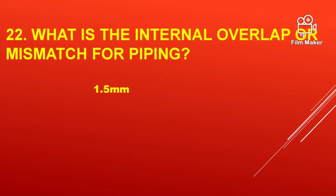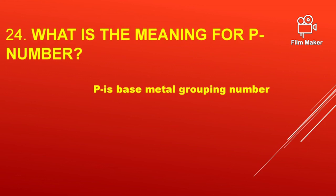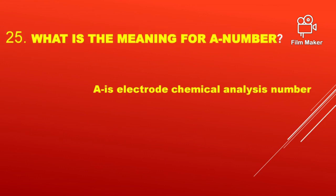What is the internal overlap or mismatch for piping? 1.5 mm maximum. What is the meaning of F number? F is the filler metal grouping number. What is the meaning of P number? P is the base metal grouping number. What is the meaning of A number? A is the electrode chemical analysis number, that is the weld metal chemical analysis number.